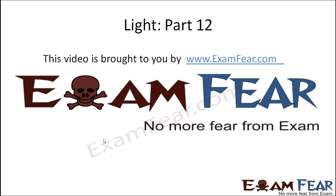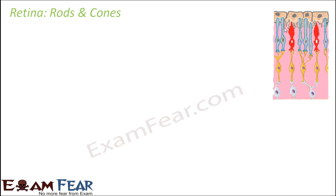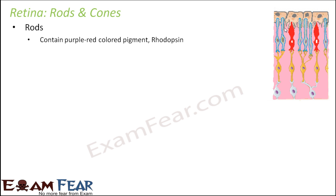This video on light part 12 is brought to you by examfear.com. Let us look more closely at the photosensitive cells of the retina — that is, rods and cones. They are photosensitive because they contain specific photo pigments which can sense light. Both rods and cones contain different pigments, and that is why they respond differently to light.